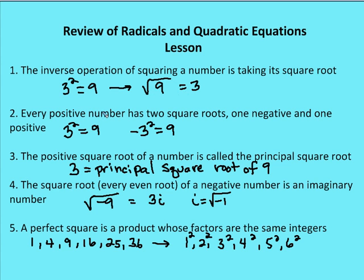Every positive number has two square roots — one negative and one positive. If I have 9 as a value, I know that 3 squared equals 9 and negative 3 squared also equals 9. A negative value squared is always going to be a positive number, so if you take a negative number to an even power you'll end up with a positive value.